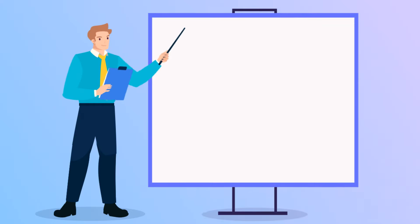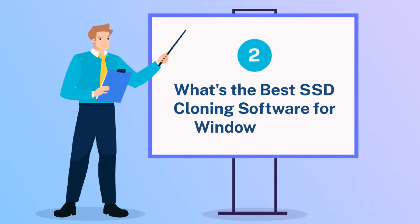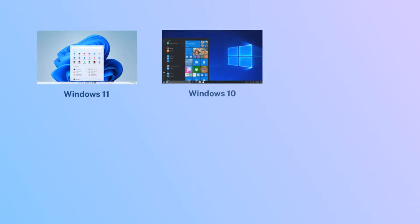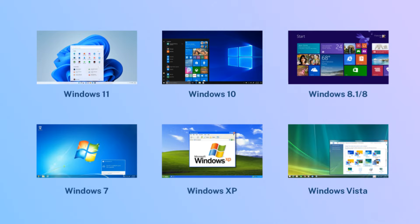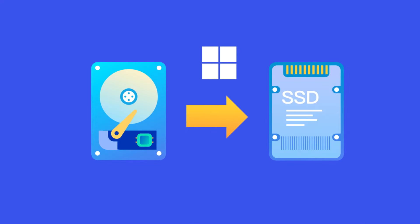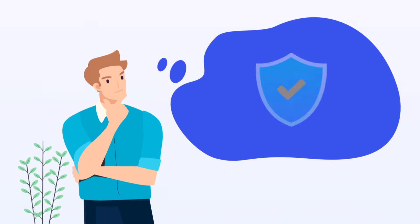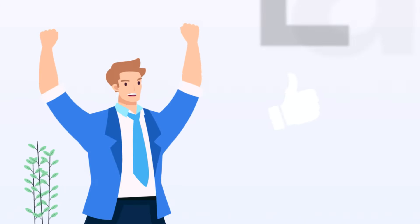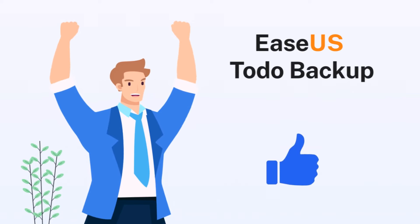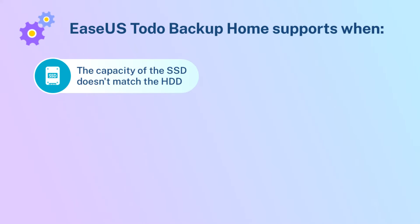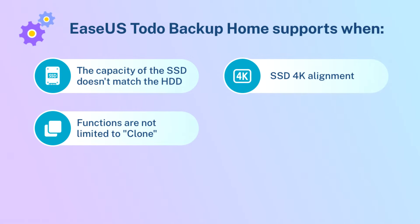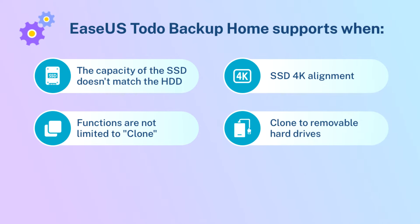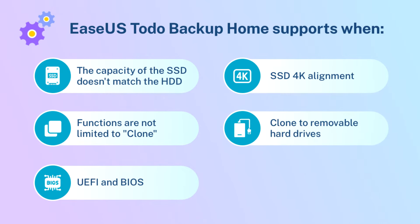What's the best SSD cloning software for Windows 10/11? It applies to Windows 11, 10, 8.1, 8, 7, XP, and Vista as well. If you're looking for a reliable method to completely migrate Windows 10 from HDD to SSD or clone Windows 10 to SSD, EaseUS Todo Backup can be the best choice. EaseUS Todo Backup Home supports: when the SSD capacity doesn't match the HDD, SSD 4K alignment, functions not limited to cloning, cloning to removable hard drives, UEFI and BIOS, and it's easy to use.